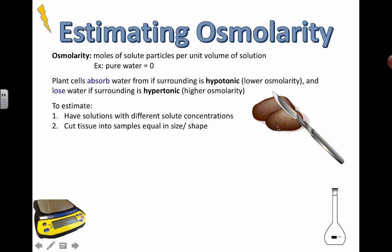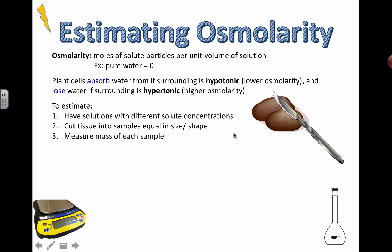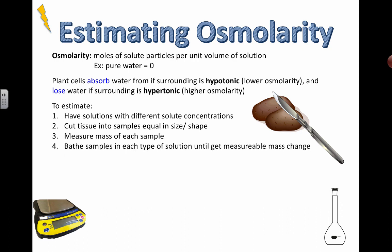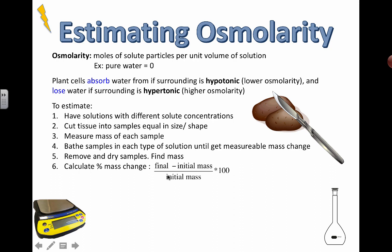You're going to cut up little potato pieces into exact similar-sized chunks, drop them into these different beakers, and see if the water goes in or out. You're going to figure that out by measuring them before and afterwards. Cut the tissue into equal sample sizes in size and shape — there are tools that can help you punch out exact shapes. Measure the mass of each sample so you can compare it afterwards. Bathe these samples in each type of solution until you get a measurable mass change, then remove and dry the samples.